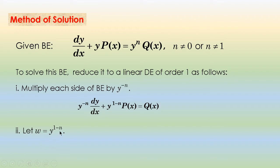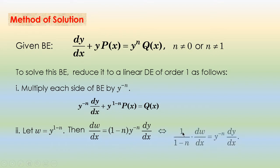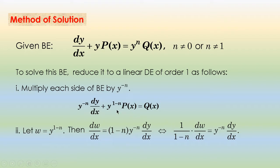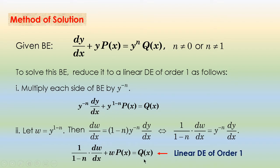Let W equal Y^(1−N). The derivative of W is given by (1−N)·Y^(−N)·dY/dX. Equivalently, 1/(1−N)·dW/dX equals Y^(−N)·dY/dX. We now express this Bernoulli's equation in terms of W and X, giving 1/(1−N)·dW/dX plus W·P(X) equals Q(X). This differential equation is a linear DE of order 1 — it is the linear DE associated with this Bernoulli's equation.